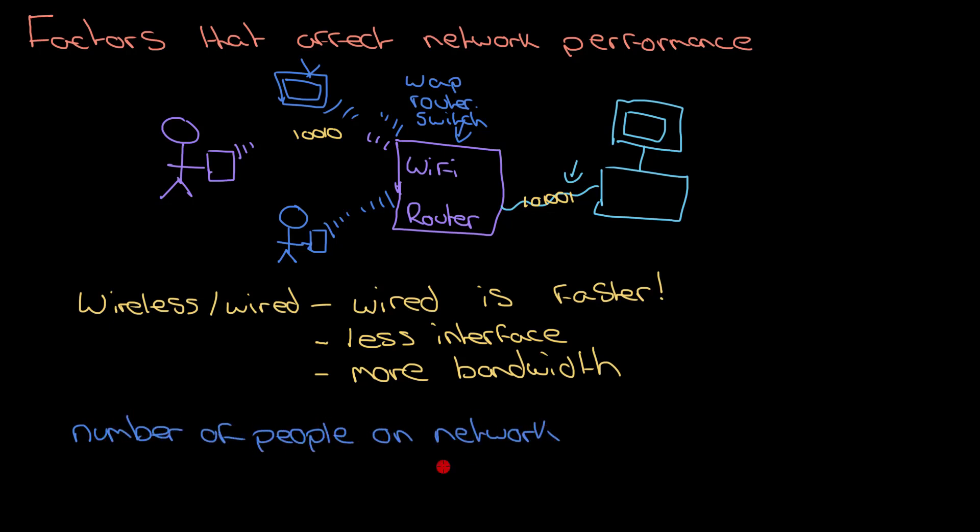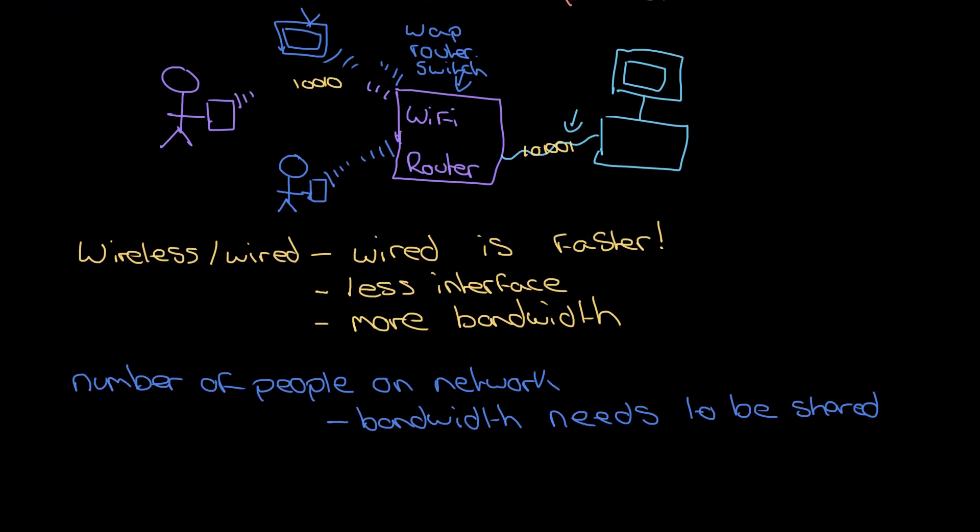And this Wi-Fi router now has to split itself like four or five different ways. So the number of people that you have on the network is really important, simply because now the bandwidth that's available to the router—so the number of ones and zeros it can go through in a second—has to be shared now between all those different users.